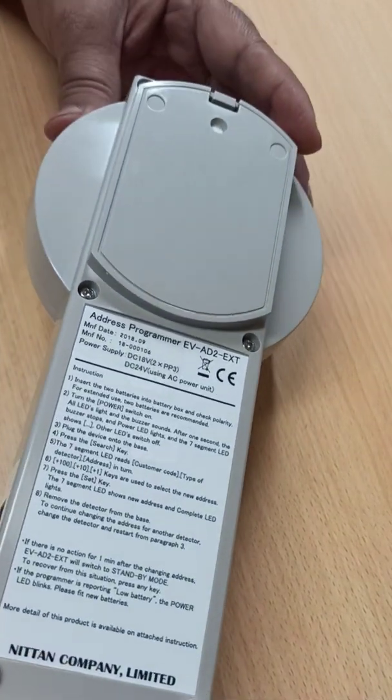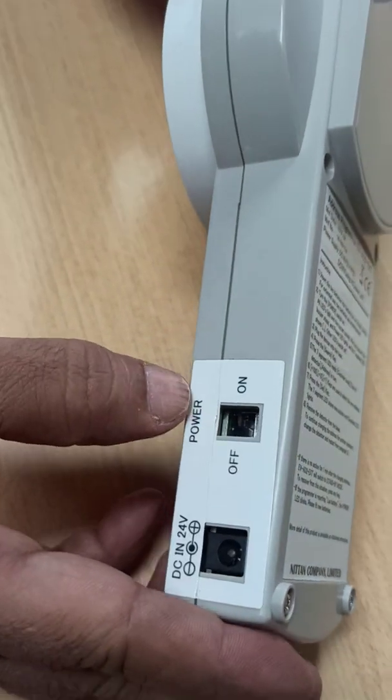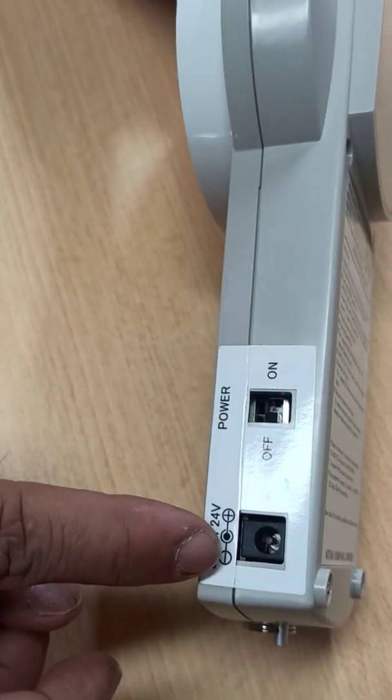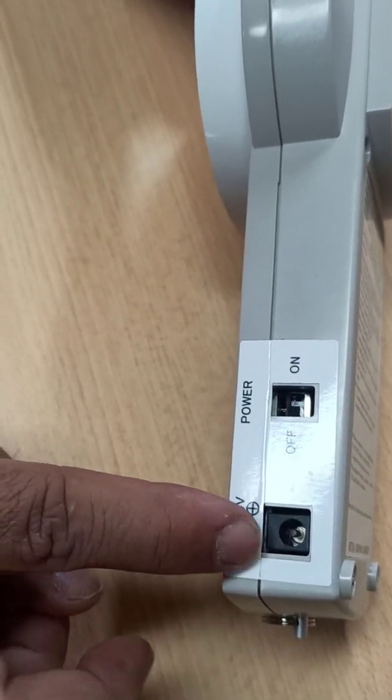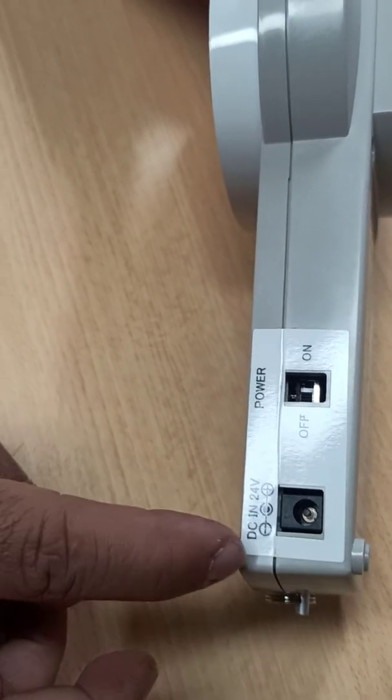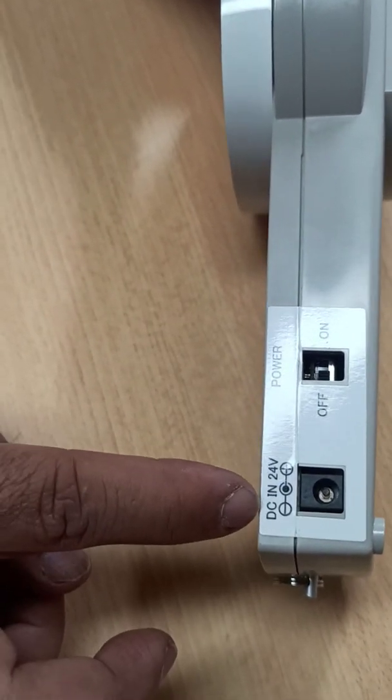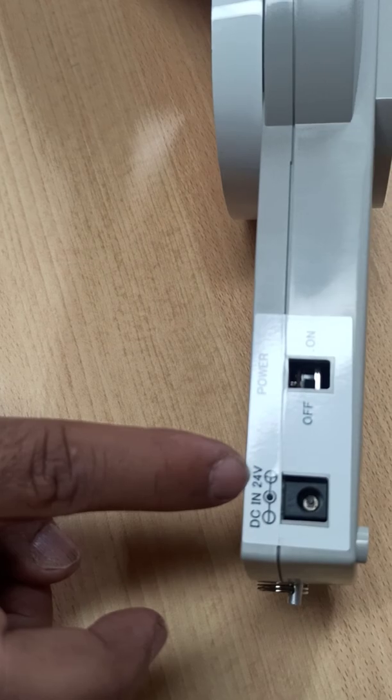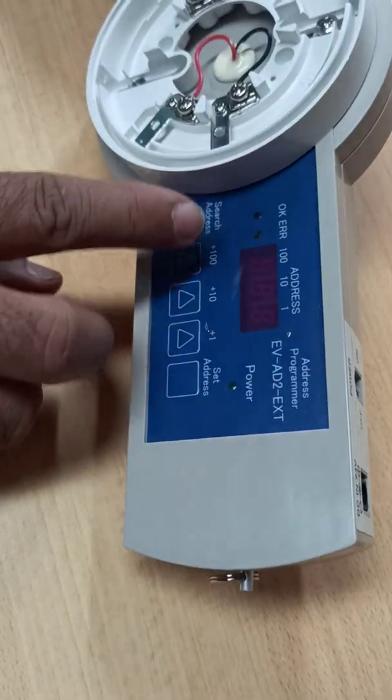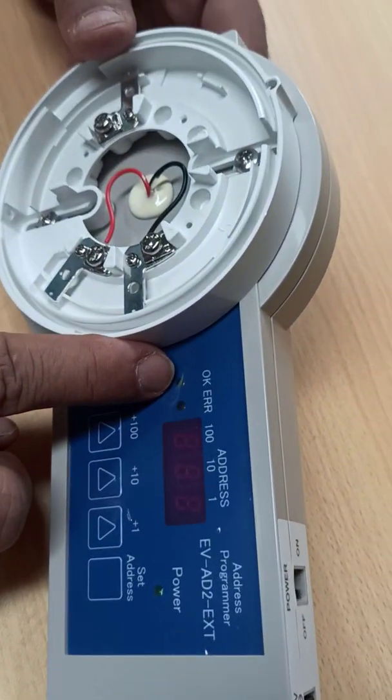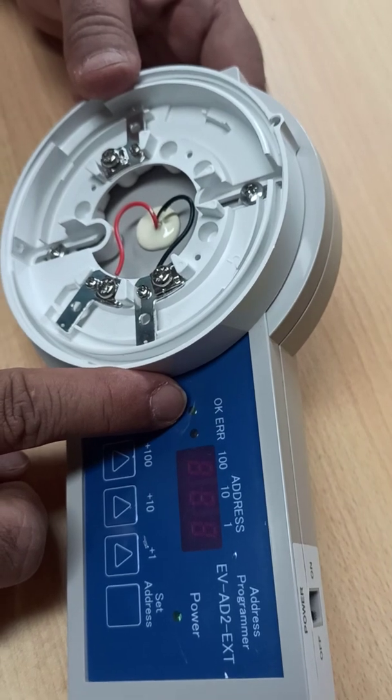This is the on-off button, power on-off button, and this is for adapter connection if you are using AC power. The adapter will convert to DC and this is the DC 24 volt in. Here we have OK, the green light. If everything is OK it will glow the green light.